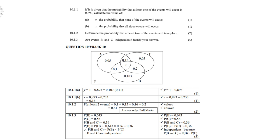10.13: are events B and C independent? Justify your answer. Add up all the values inside B, including X which is 0.16 — you get P(B) = 0.643. Do the same with C — you get P(C) = 0.56. The probability of B and C together is 0.36. Since P(B) times P(C) equals 0.643 times 0.56, which equals 0.36, the two values are the same. Therefore P(B and C) = P(B) × P(C), so B and C are independent.